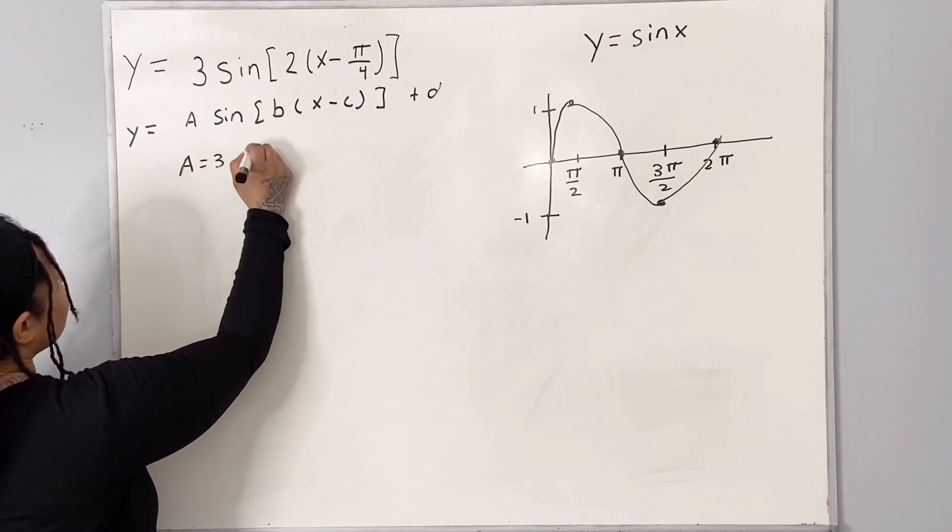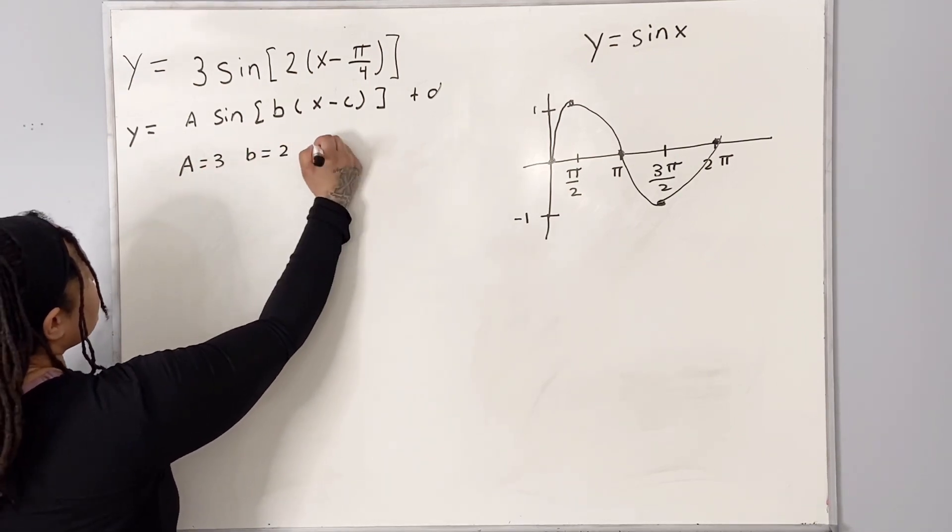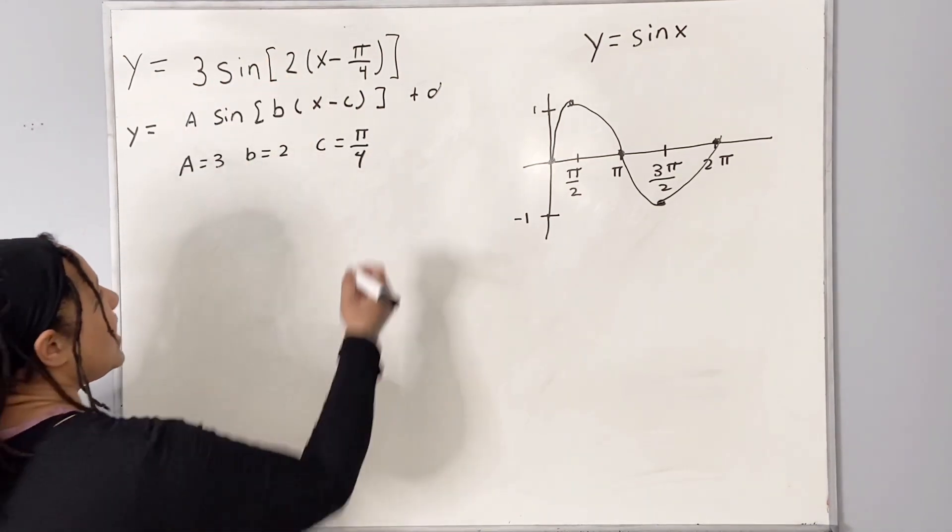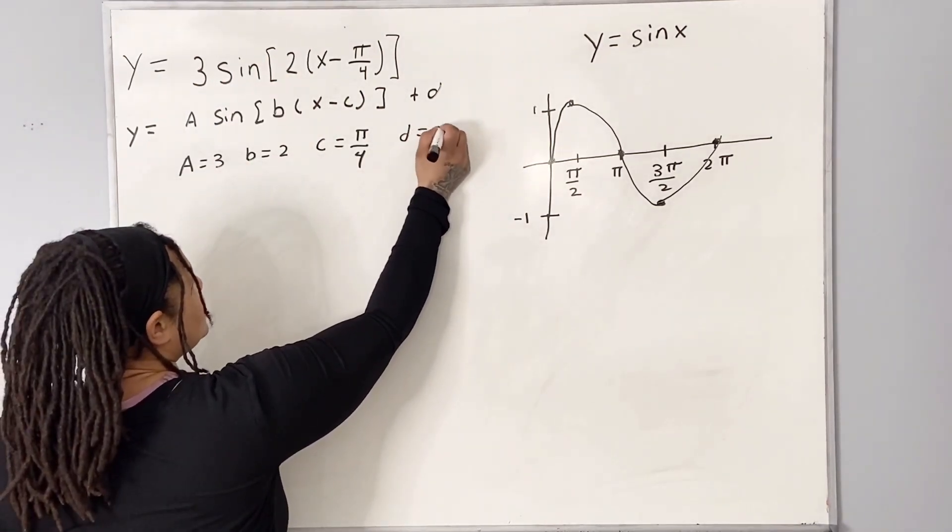b is equal to 2, c is equal to pi over 4. Be careful here, we need to flip the signs. And our d is equal to 0.